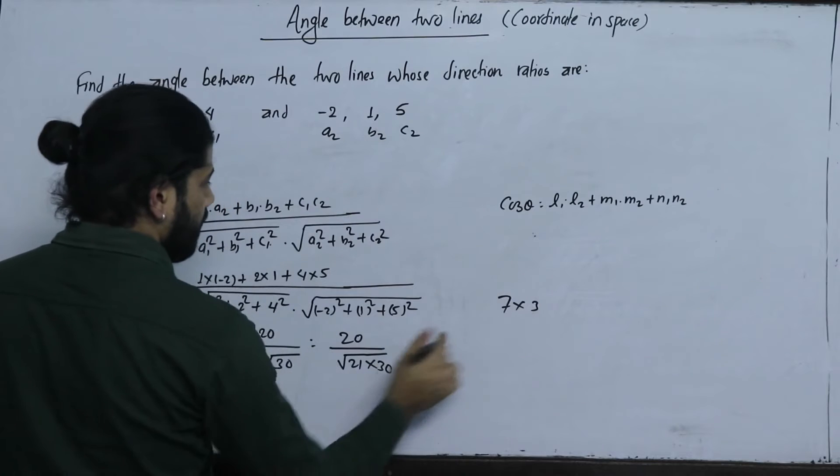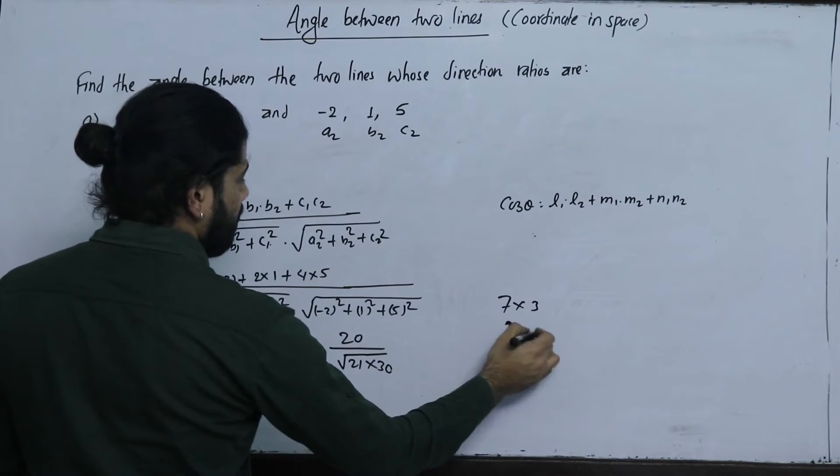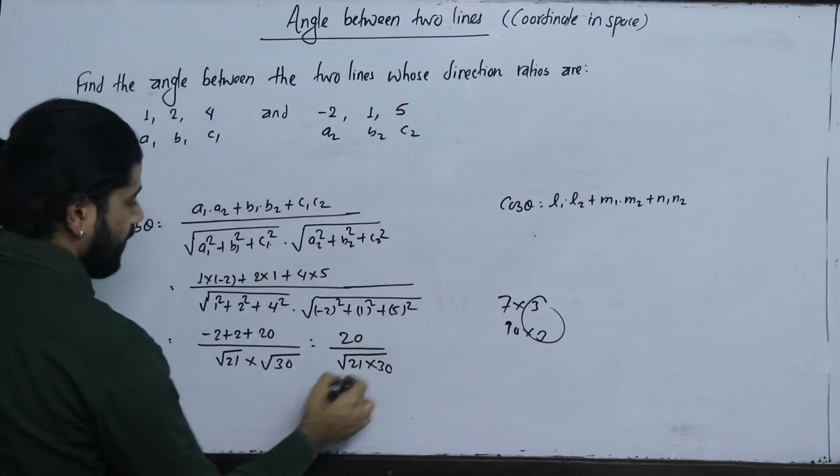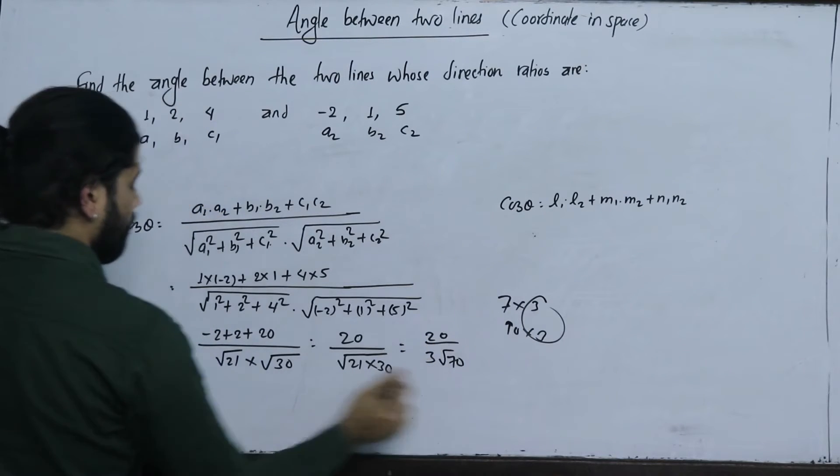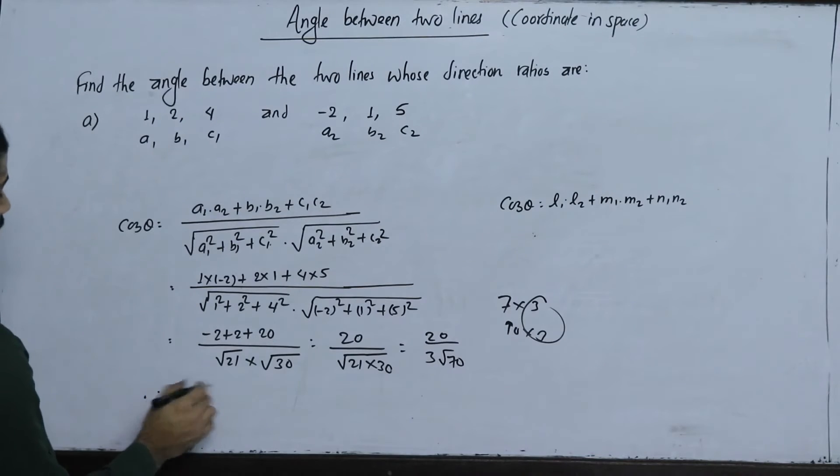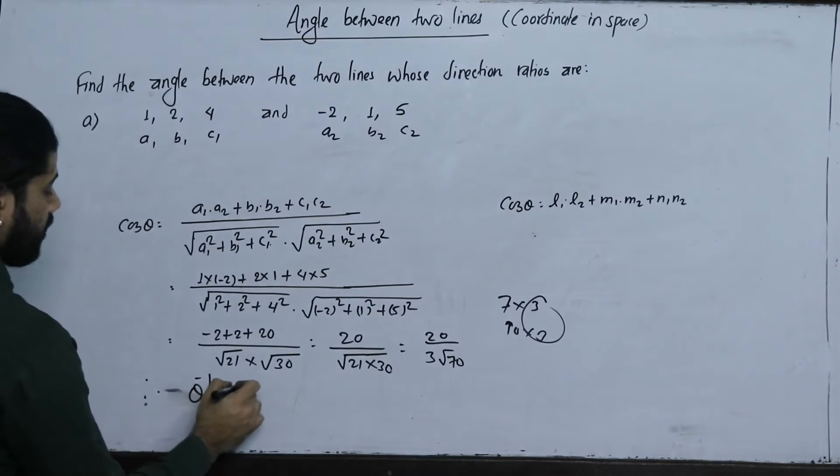It's root 21 times root 30. Then theta equals to cos inverse 20 over root 21 times root 30, which simplifies to 20 over 3 root 70.